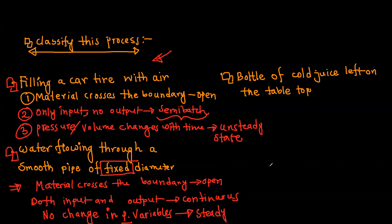Example number three: a bottle of cold juice left on the table top. Our material, cold juice, is in the bottle, so the material doesn't cross the boundary. That is a closed system.